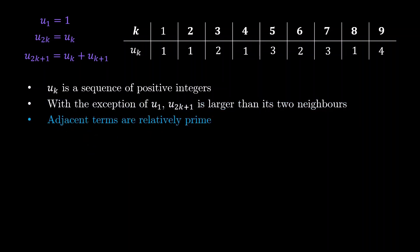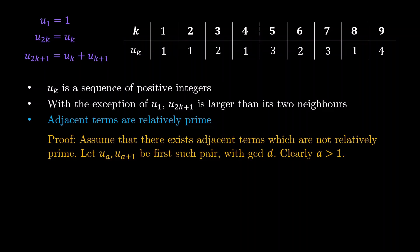How about the third statement? Now we are getting to more interesting statements. Now we will prove that adjacent terms are relatively prime. To do this, we will use our favorite proof technique, which is proof by contradiction.